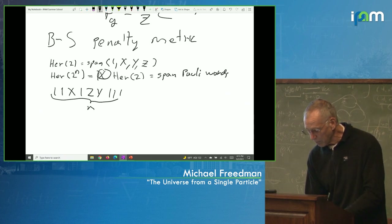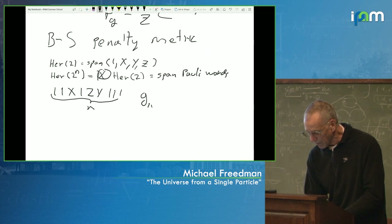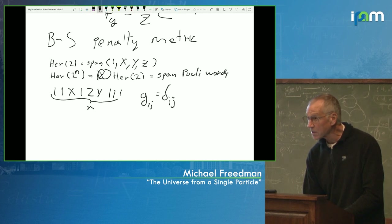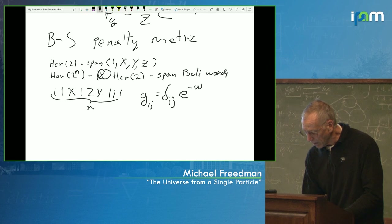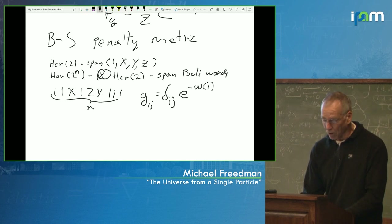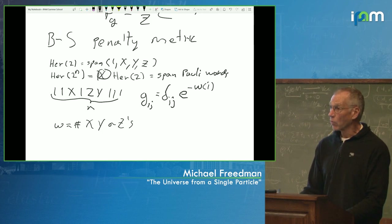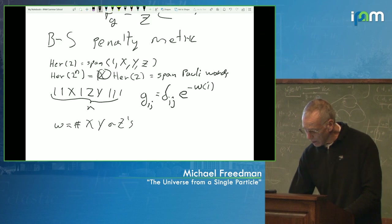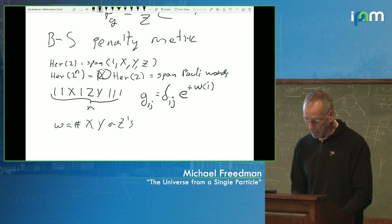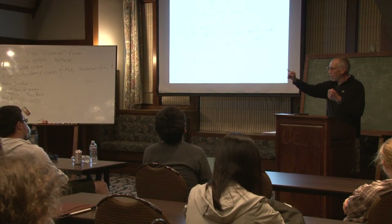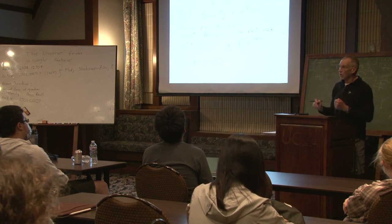The Brown-Susskind metric G_ij is diagonal on this Pauli word basis, with entries e to the plus weight of the i-th word, where the weight is the number of non-identity (X, Y, Z) letters in the Pauli word. So the example I wrote had weight three. The metric charges more — you measure longer — if you have three letters instead of two, meaning high-body interactions cost more.